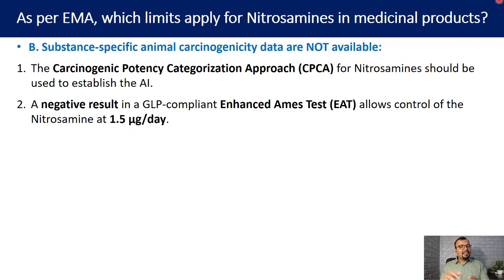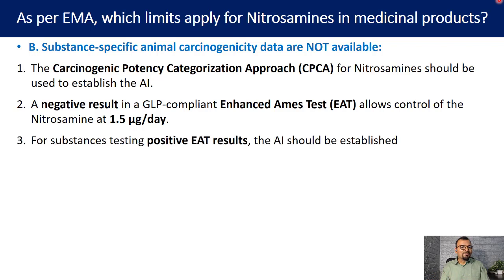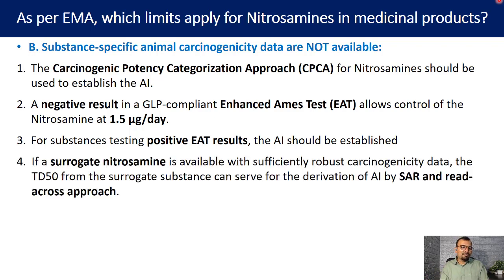A negative result in a GLP-compliant enhanced Ames test, or EAT, allows control of the nitrosamine at 1.5 micrograms per day. Detailed information on the EAT is provided in the same Q&A guidance document. For substances testing positive in the EAT, the acceptable intake should be established and the CPCA approach can be used.